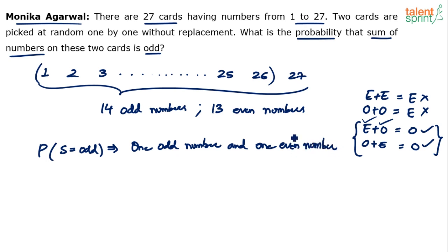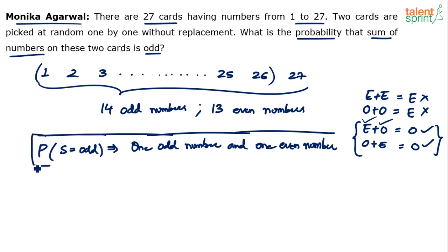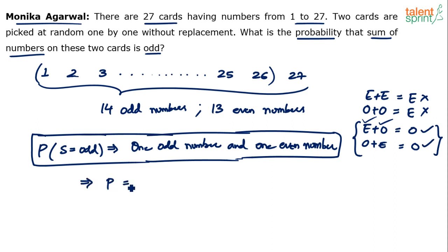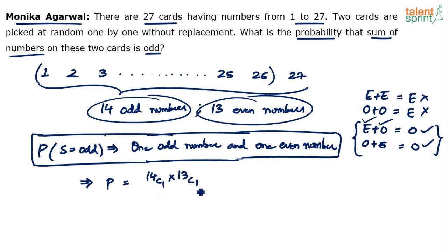The probability that the sum is odd means you have to choose one odd number and one even number. The number of favorable ways: one odd number out of 14 odd numbers gives 14C1 ways, and one even number out of 13 even numbers gives 13C1 ways. The total number of cases: out of 27 cards, choose two cards, which is 27C2.